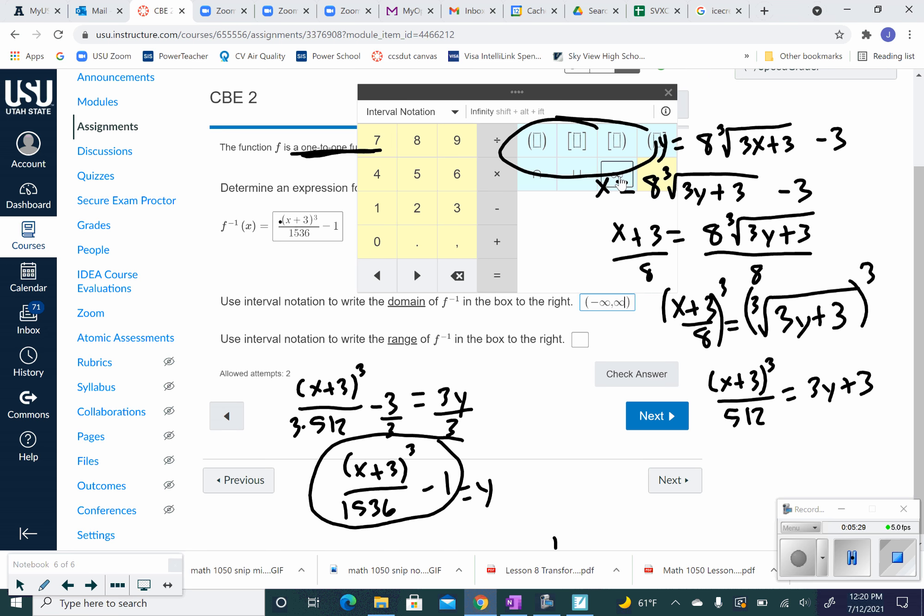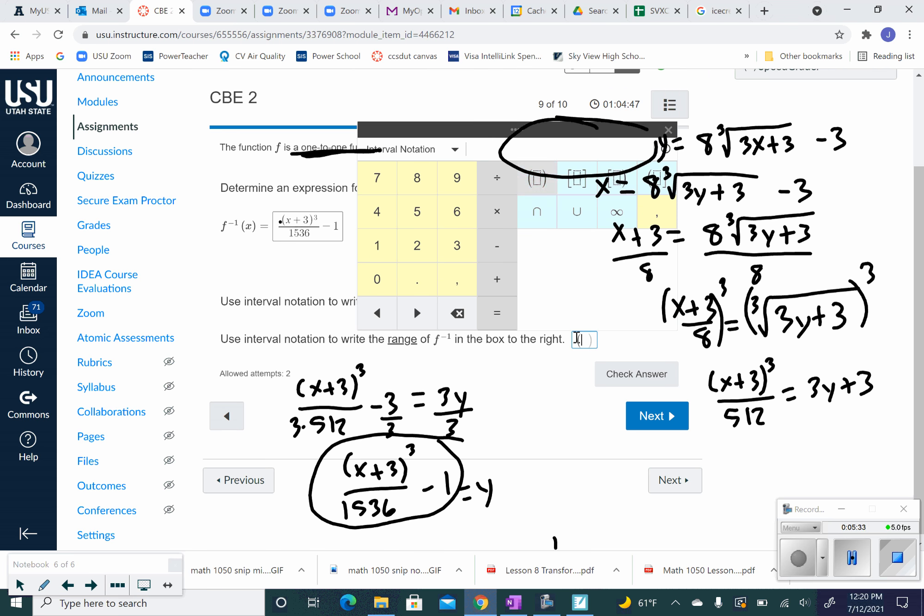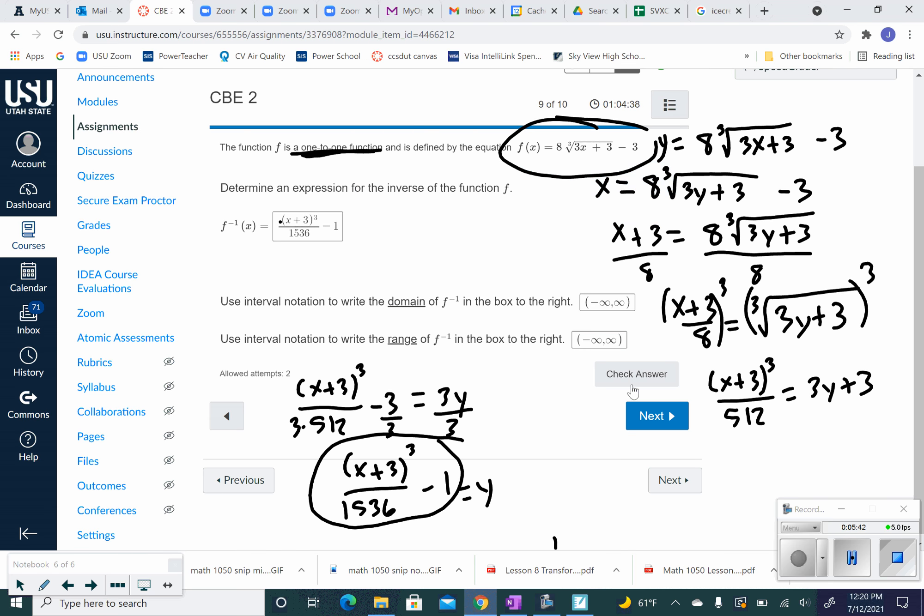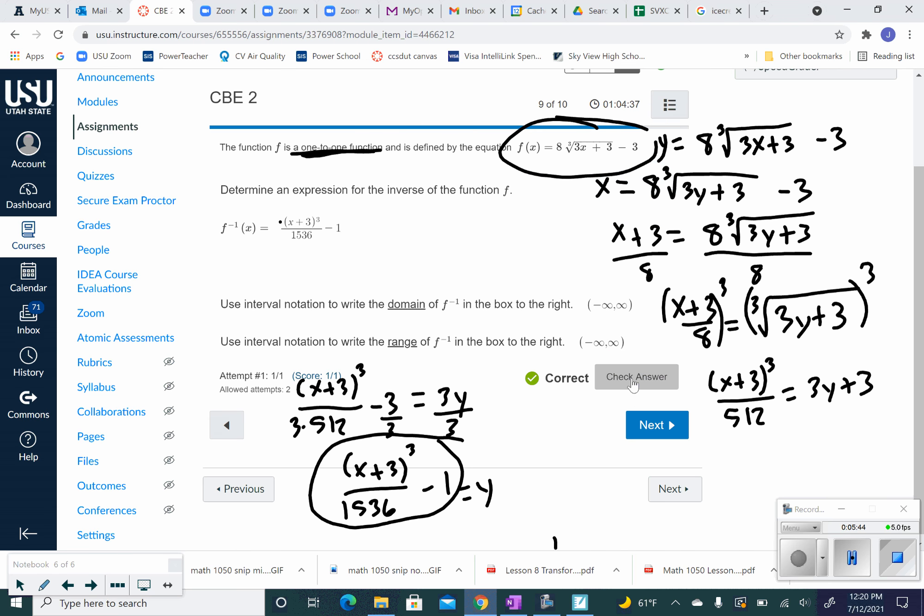So we're going to use interval notation to put this inside. Just be negative infinity to infinity. Oops. One, two, eight there. And then the range is the same thing. Check our answer. Looks good.